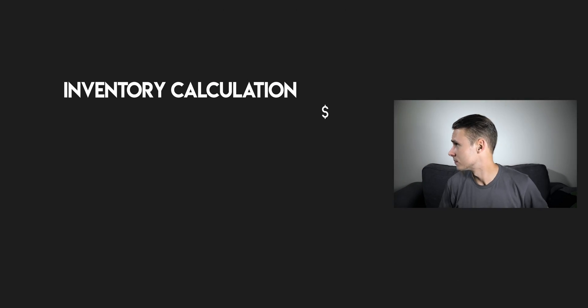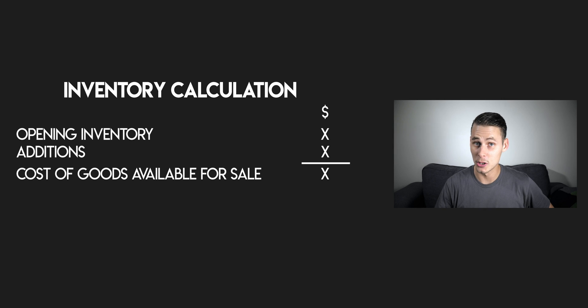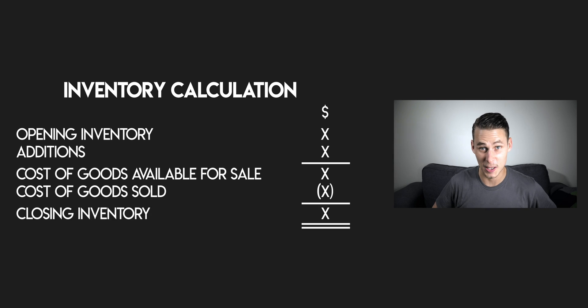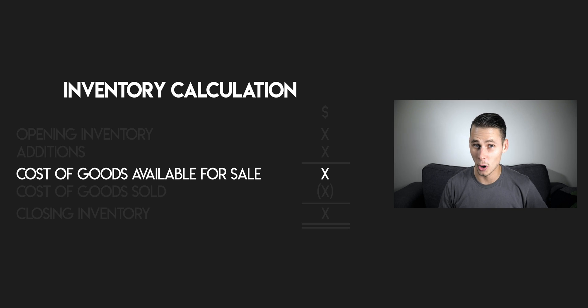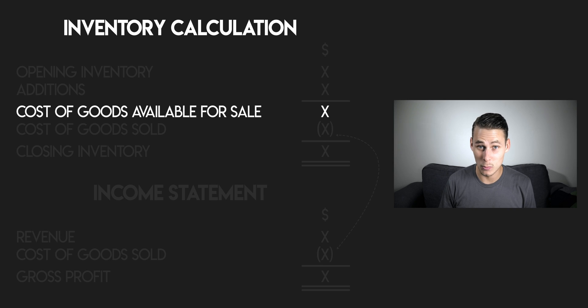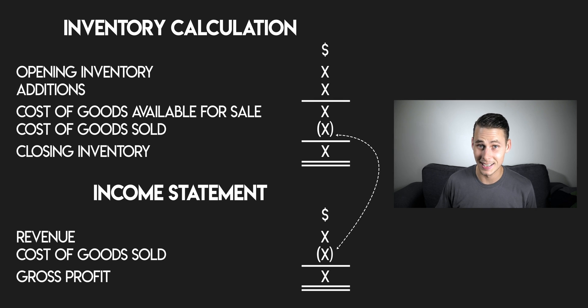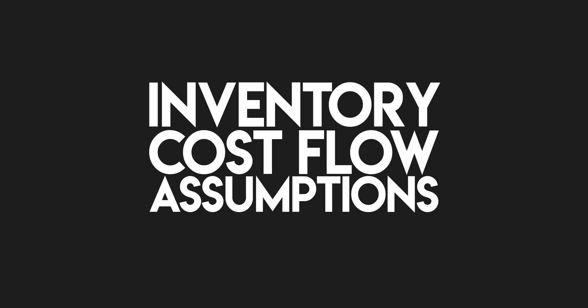First, a quick reminder — the basic inventory calculation looks like this: you have your opening inventory plus your additions, which gives you your cost of goods available for sale, and when you take away your cost of goods sold you get your closing inventory. When we talk inventory cost flow assumptions, we're trying to work out how much cost needs to flow into cost of goods sold in your income statement when you make a sale, and on the flip side how much cost should remain in your closing inventory on your balance sheet. Calculating this can be a bit tricky if you pay different amounts for your inventory, and that's where inventory cost flow assumptions come in. These are basic rules that help you estimate your cost flows — they don't reflect the reality of underlying transactions.